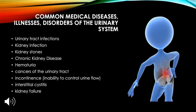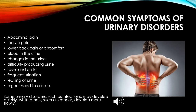Common medical diseases and disorders of the urinary system include: urinary tract infections, kidney infections, kidney stones, chronic kidney disease, hematuria, cancers of the urinary tract, incontinence, interstitial cystitis, and kidney failure. Common symptoms include abdominal pain, pelvic pain, lower back pain, blood in the urine, changes in urine, difficulty producing urine, fever and chills, frequent urination, leaking of urine, and urgent need to urinate. Some disorders develop quickly while others, like cancer, develop more slowly.